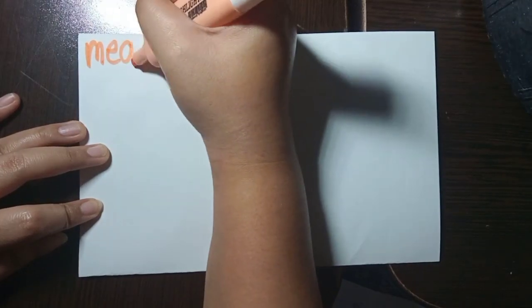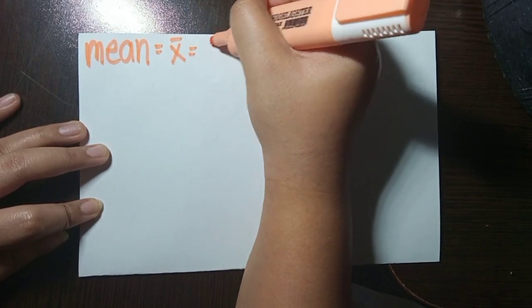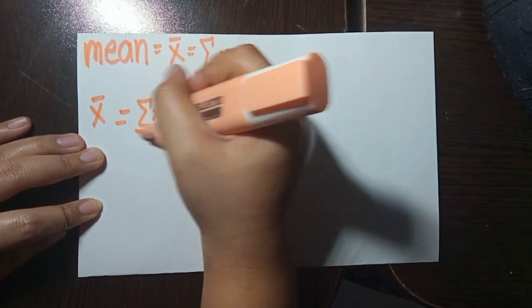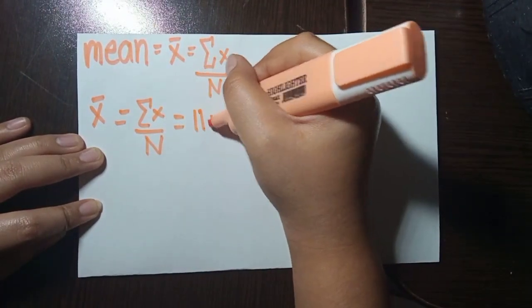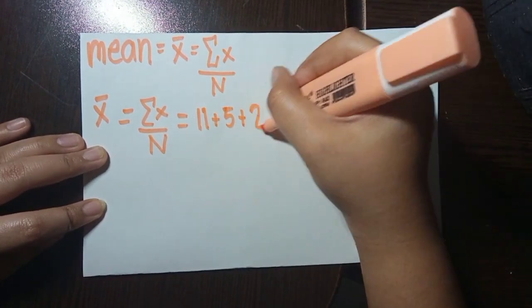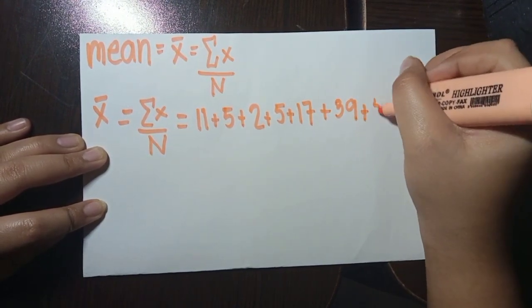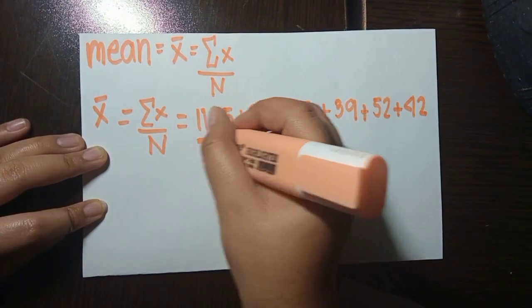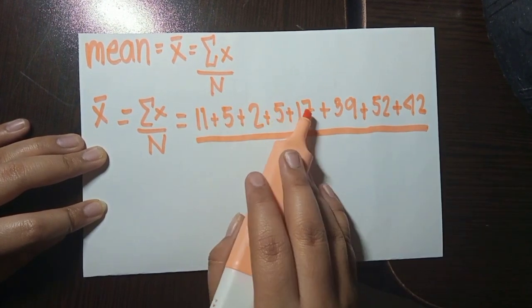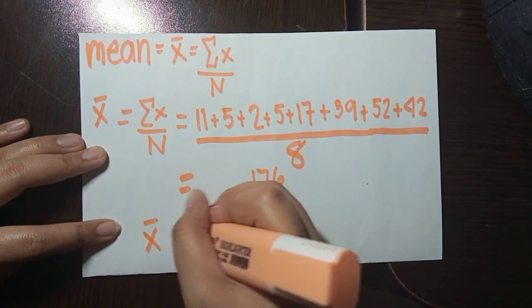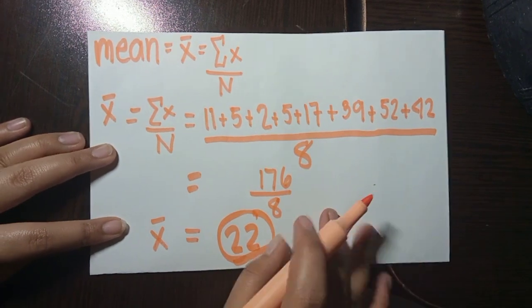This is the set of data for the third problem. We need to determine its mean, median, and mode. Let's determine the mean first. Again, in looking for the mean, we use the formula of summation of x over n — adding all values over the number of values. So, 11 plus 8 plus 2 plus 5 plus 17 plus 39 plus 52 plus 42 equals 176. We divide that by 8 because there are 8 values. 176 divided by 8 equals 22. Therefore, the mean for this set of data is 22.